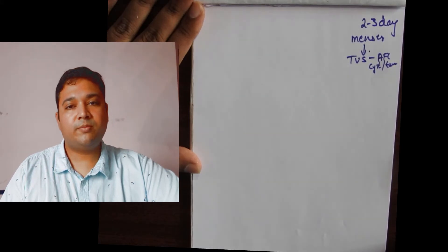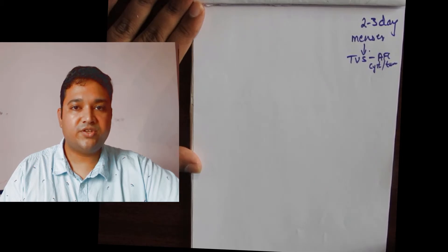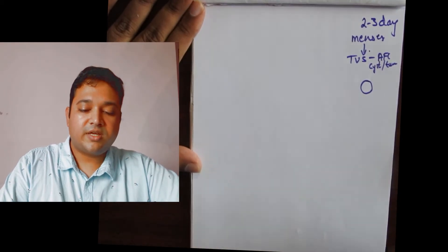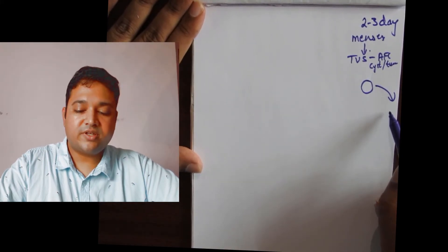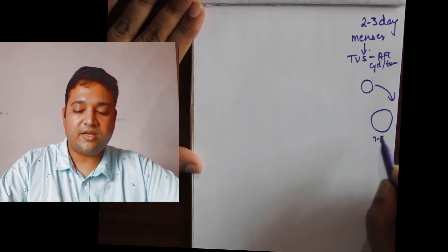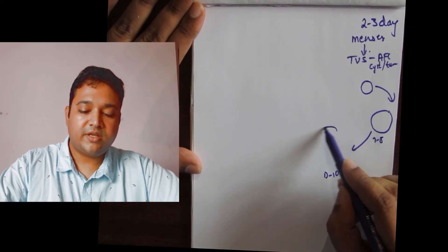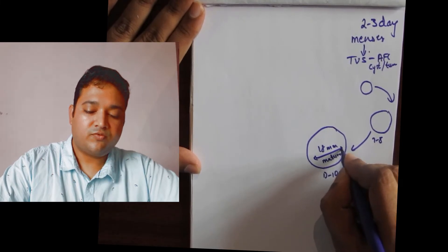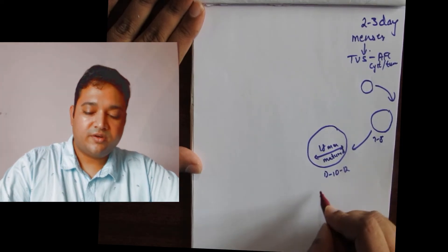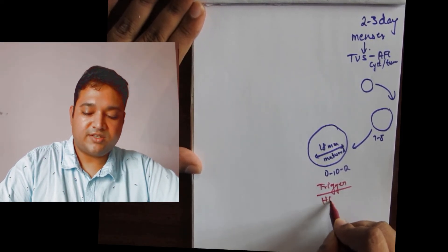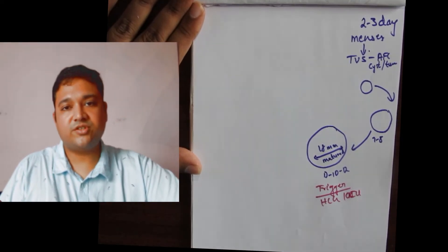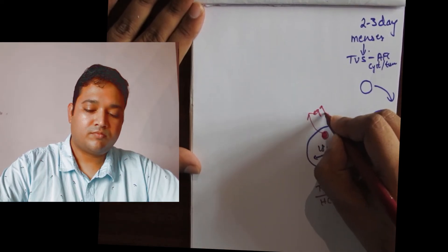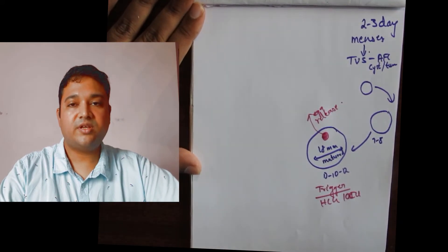Depending on a case-to-case basis, we either give tablets or gonadotropin injections or a combination of both, which leads to the production of eggs called follicles. The eggs are small to begin with on day 2 or 3. As the follicles progress, they increase in size, and by approximately day 10 to 12 they reach 18mm — the mature follicle size. When the follicle is mature, we give an injection called a trigger, which is usually HCG 10,000 international units. This injection causes the release of the egg from the follicle, which is then used for the fertilization process inside her fallopian tubes.